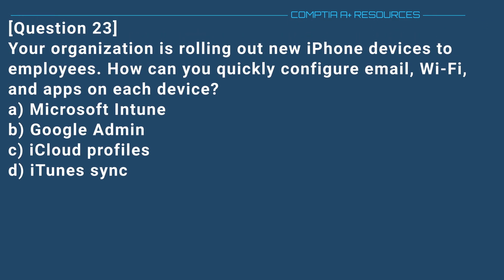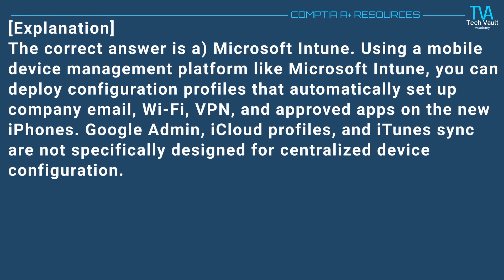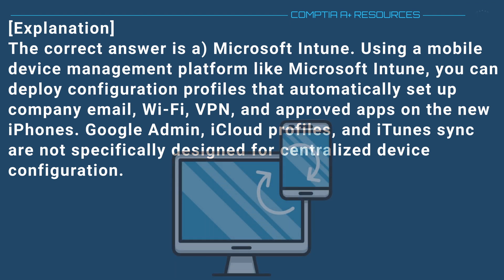Question 23. Your organization is rolling out new iPhone devices to employees. How can you quickly configure email, Wi-Fi, and apps on each device? The correct answer is A. Microsoft Intune. Using a mobile device management platform like Microsoft Intune, you can deploy configuration profiles that automatically set up company email, Wi-Fi, VPN, and approved apps on the new iPhones. Google Admin, iCloud Profiles, and iTunes Sync are not specifically designed for centralized device configuration.